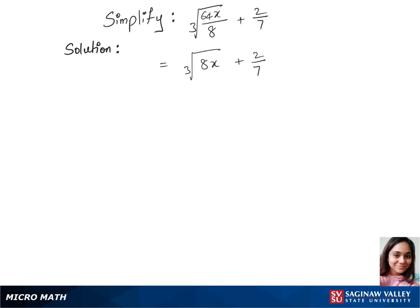Now let's separate the cubic root between 8 and x. That's cubic root of 8 times cubic root of x plus 2 over 7.